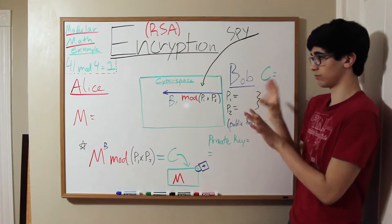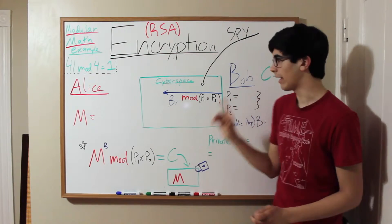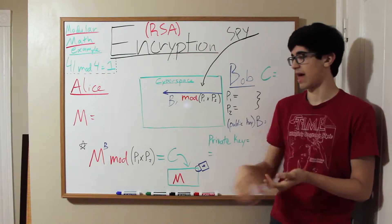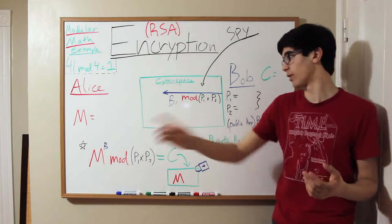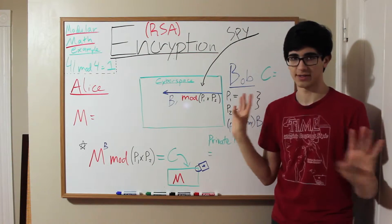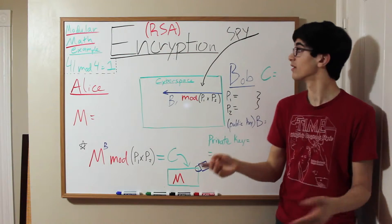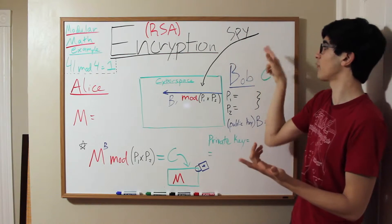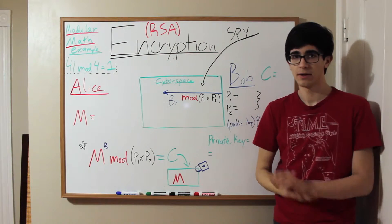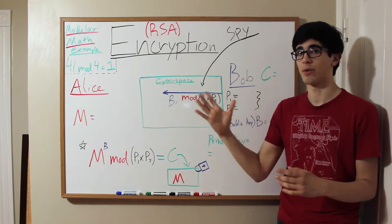So first of all, what is this whole setup? This whole setup is a communication between Alice, A, and B, Bob. So Alice has a message, M, that she wants to send to Bob. The problem is she has to send it over cyberspace, over the internet somehow, to establish this connection. But as is often common with the public internet, there's a spy who's always watching and who can see anything that they communicate over cyberspace. So how do they ensure this interaction is complete without the spy knowing what the message is?